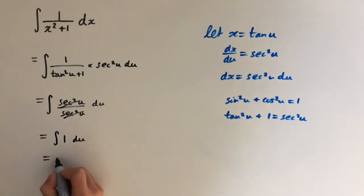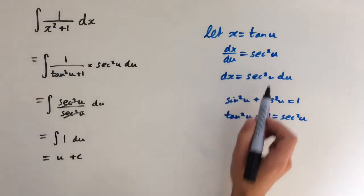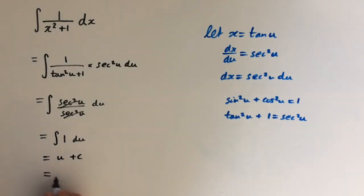So this equals u plus c. And the last step is to substitute back in for u. So we know that x equals tan of u, which means that u equals arctan of x plus c. So there you go, integral of 1 over x squared plus 1.